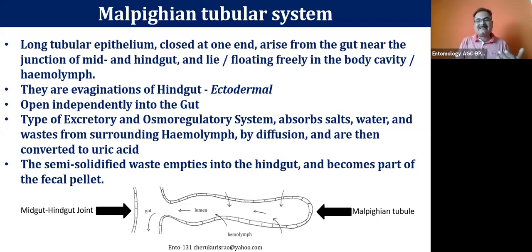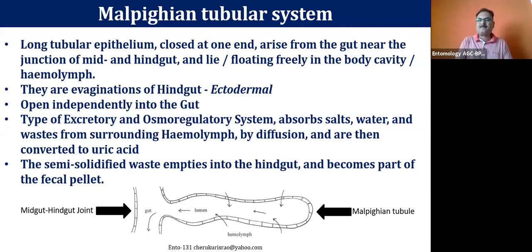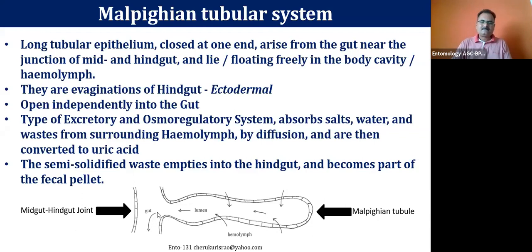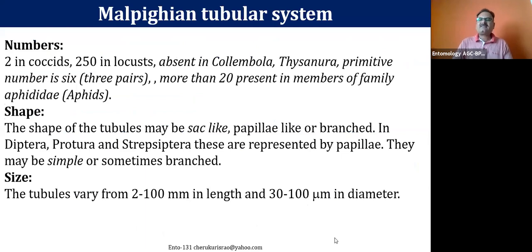All the metabolic waste from the cell system comes into the haemolymph, and the metabolic waste present in the haemolymph has to be removed; otherwise there is ionic imbalance and no regulation of osmotic pressure. That is the reason all the metabolic wastes coming into the haemolymph must be removed — the haemolymph has to be purified and cleaned. That cleaning process is done by the Malpighian tubules. They are single-layered epithelial cell tubes, and their numbers may vary from insect to insect.